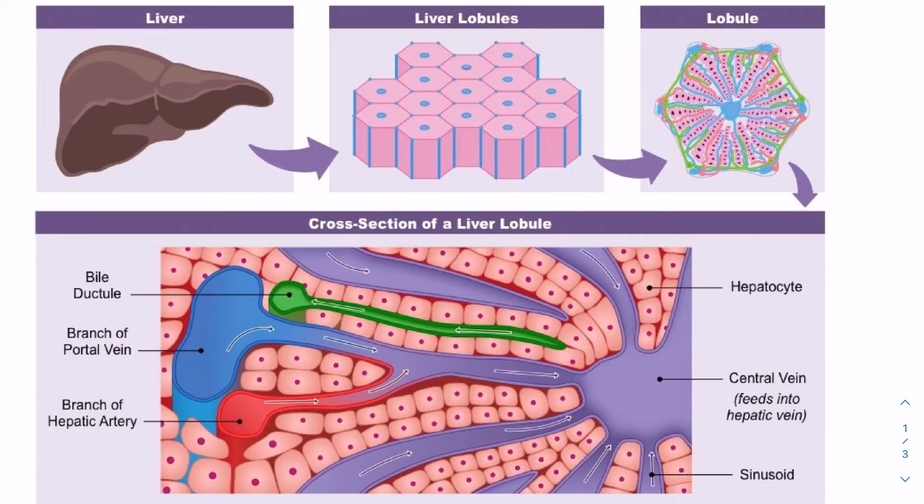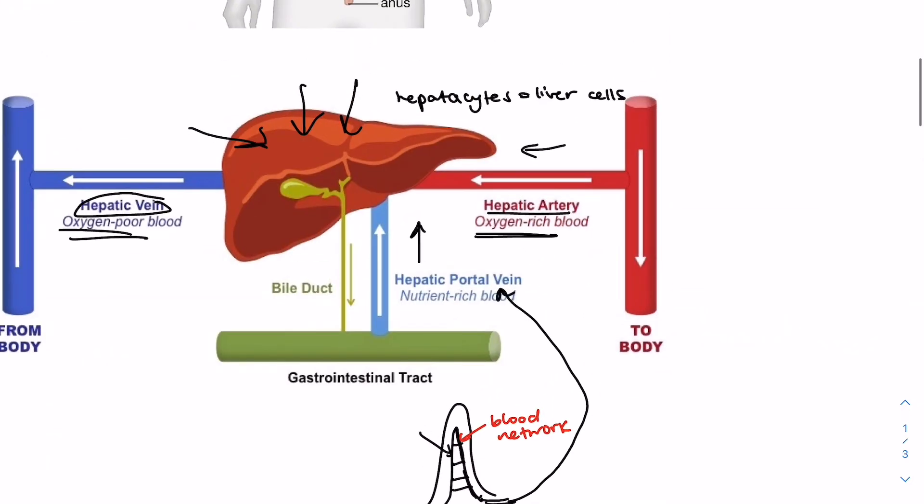So the liver is composed of a smaller structure called lobules, which have this kind of hexagonal shape. And each lobule is surrounded by branches of the hepatic artery, which provides oxygen, and the portal vein, which provides nutrients, as explained previously up here.